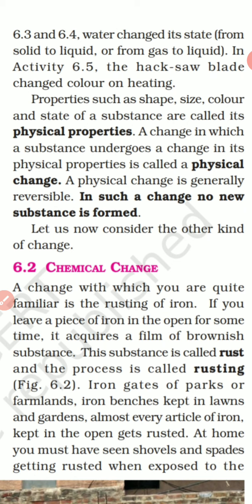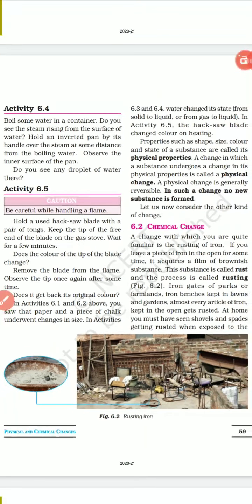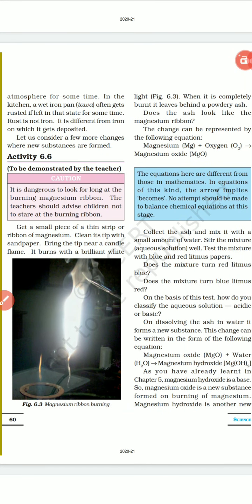They will become rusted when exposed to the atmosphere for some time. In the kitchen, a wet iron tawa often gets rusted if left there. This is a chemical change. How does it happen? A new substance is formed due to reaction of iron and the air and the moisture in the air, that is the rust. It is not iron, it is a new substance which is formed and is deposited on the iron.